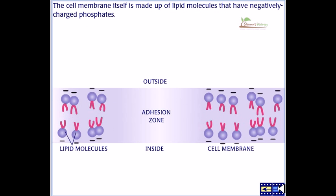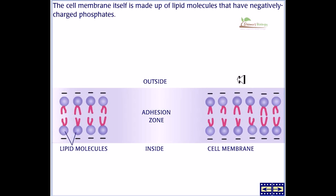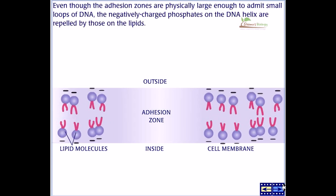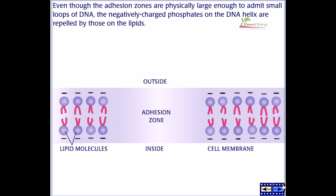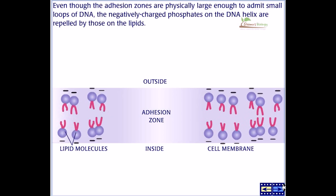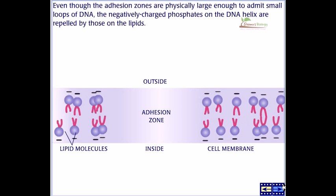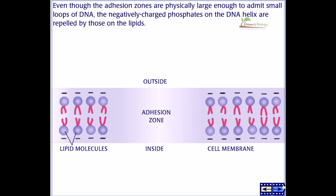The cell membrane itself is made up of lipid molecules that have negatively charged phosphates, as you can see in the outer layer. Even though the adhesion zones are physically large enough to admit small loops of DNA, the negatively charged phosphates on the DNA helix are repelled by those of the lipids.